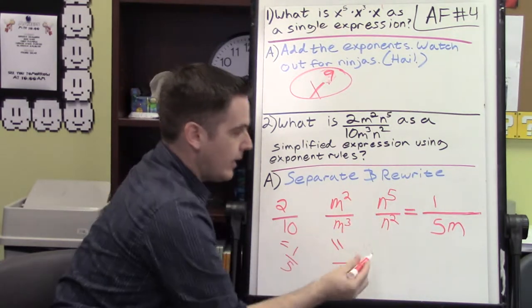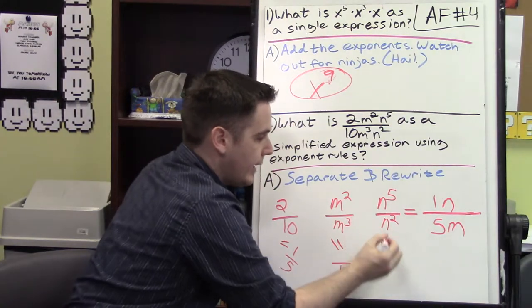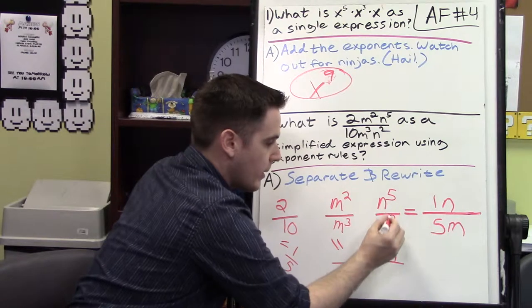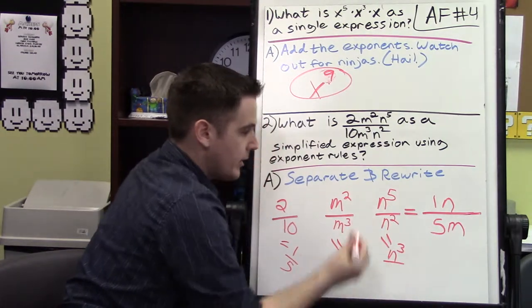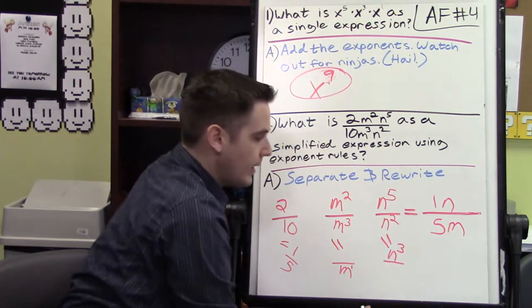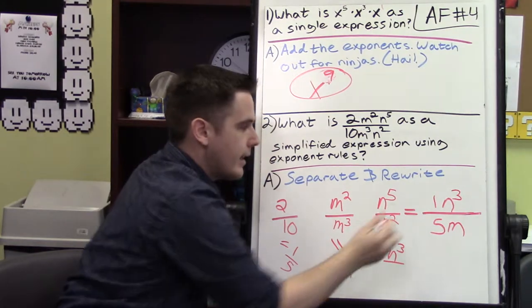Now the n's, the bigger n is on top, so we can go ahead and put that over there. That will leave us with n, 5 minus 2 is 3, because with division you subtract the exponents. Multiplication you add them. Nothing on bottom, that n to the 3 stayed on top, so that goes there.